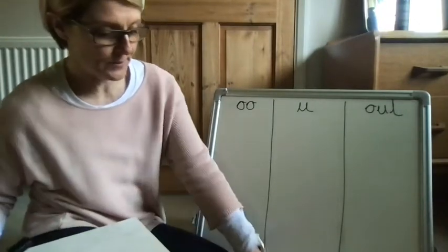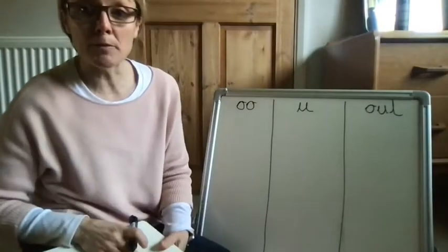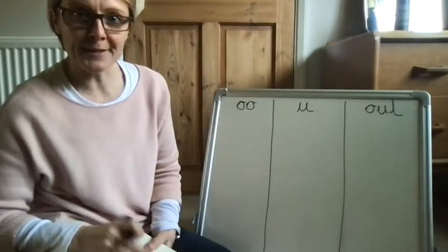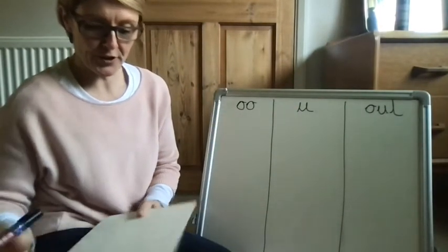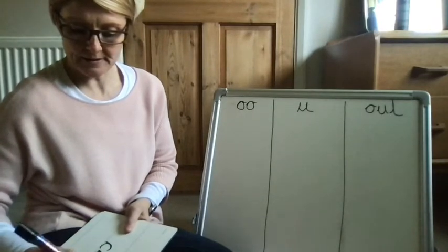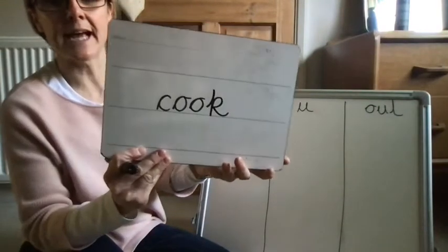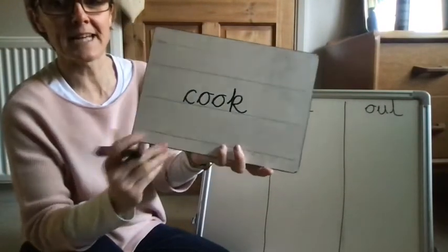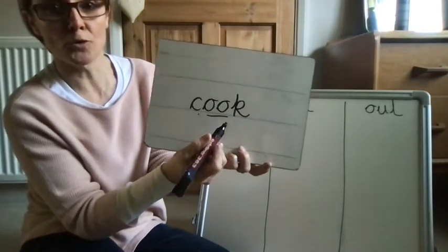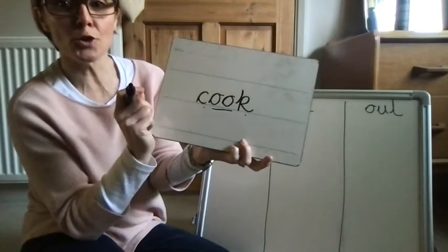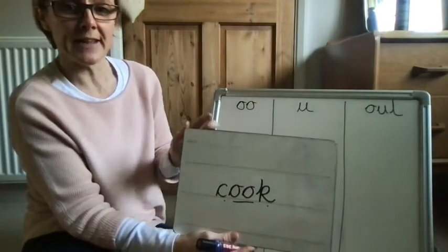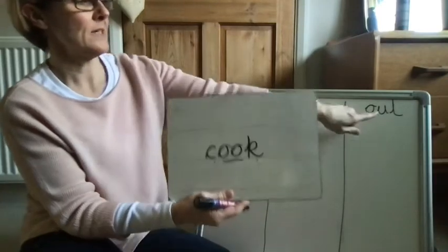So we're going to be diagraph detectives now. I'm going to write a word on my board and you're going to read it, and then we're going to decide which spelling we can see in this word. What does this one say? Being a diagraph detective — cook. So which way have we spelt 'oo' in this word? This way, this way, or this way?